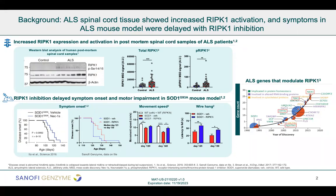Inhibiting RIP-K1 with NEC1 or with other RIP-K1 inhibitors also improves motor speed and wire hanging — motor function — in the SOD1 mouse model.